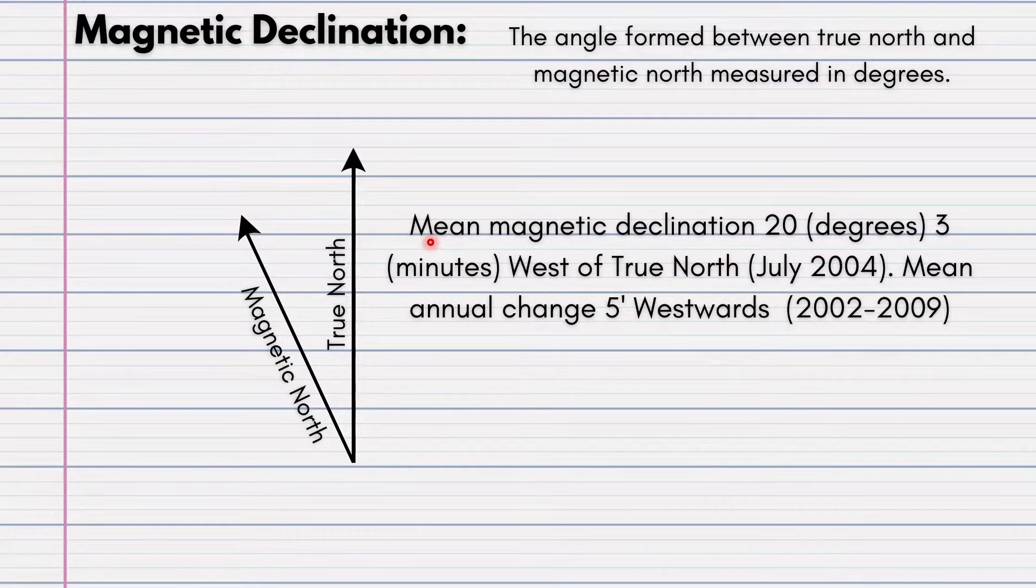Let us read this. Your mean magnetic declination, 20 degrees, 3 minutes, west of true north, July 2004. Your mean annual change is 5 minutes westwards, 2002 to 2009.